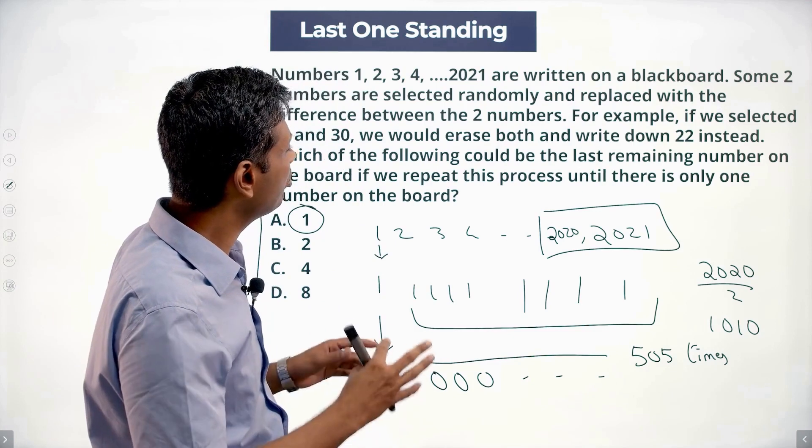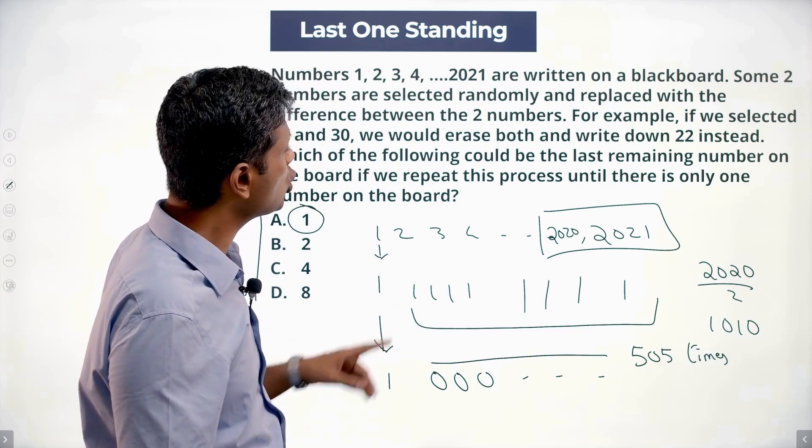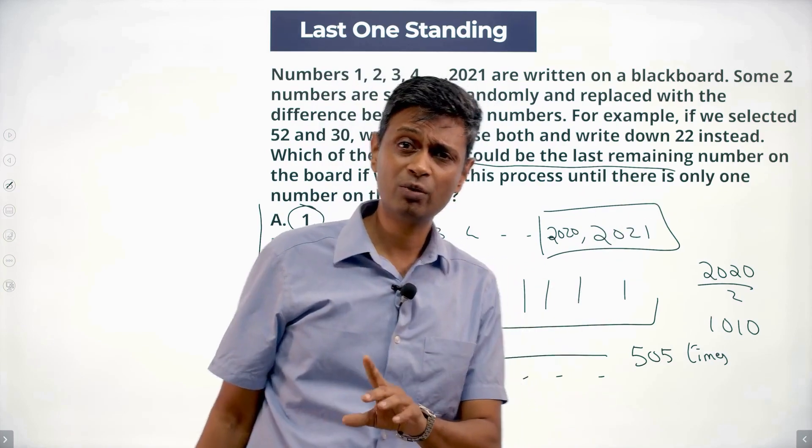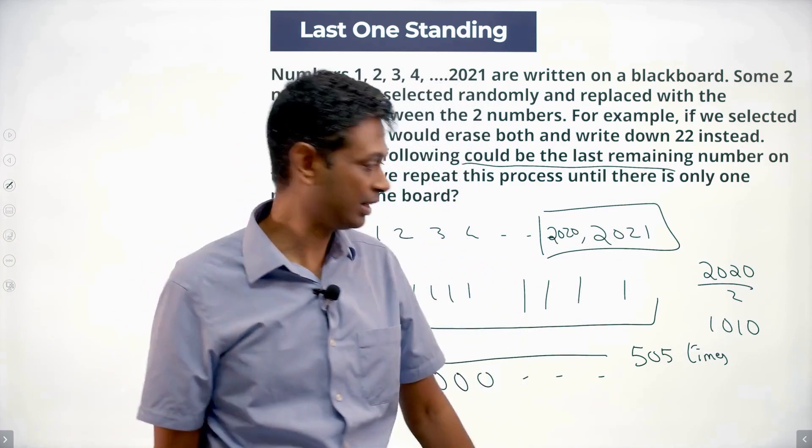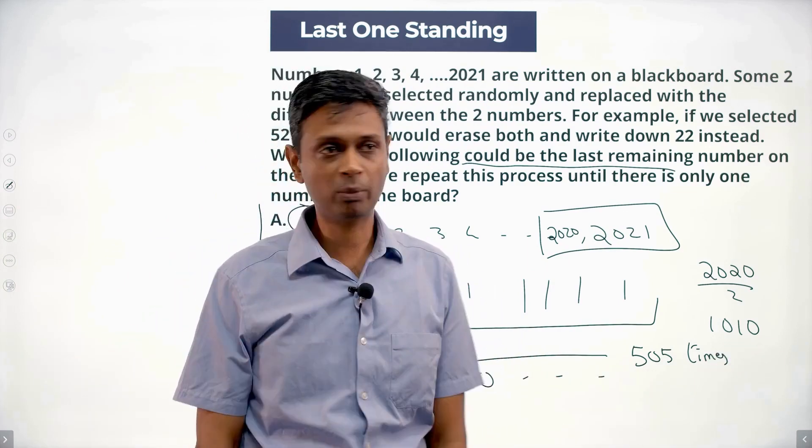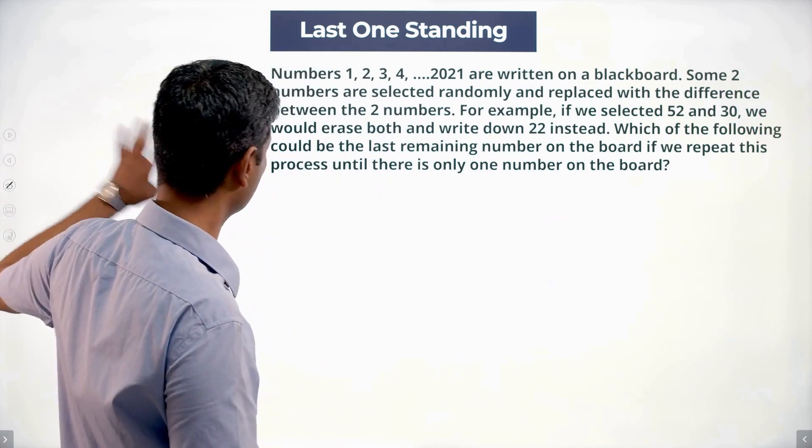The question here says, I keep replacing, which of the following could be the last remaining number? Could be. I'm not saying will be. Which of the following could be the last remaining number? It could be 1. This is a way of saying it could be 1. I'm trying to find one number, it could be 1. Now I'm going to establish this.